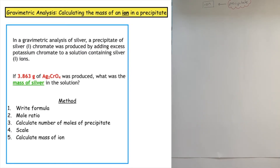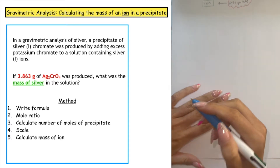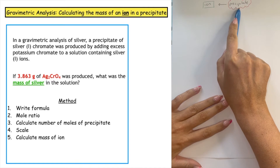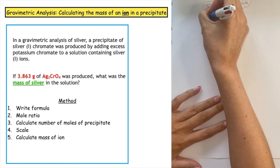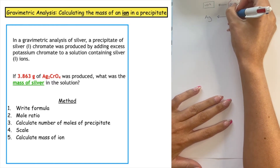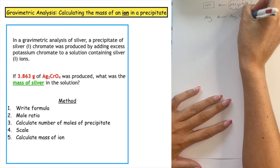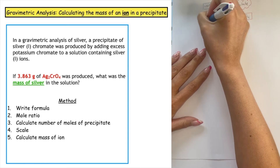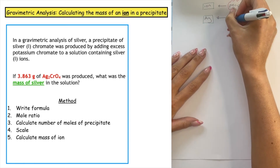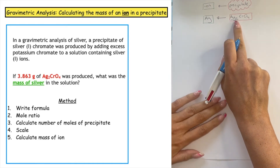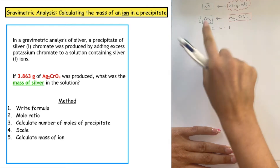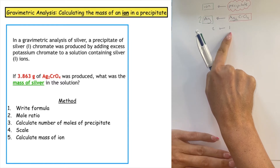Here's the second example. We always have to find out which ion we're trying to work out and we need the formula for the precipitate. The question asks us to work out the mass of silver — that's the ion — which is found in the precipitate whose formula is Ag₂CrO₄. The formula is the most important step: we have to see how many silver ions are found in the precipitate. There are two silvers in one formula unit of the precipitate, so the ratio is a two to one ratio.